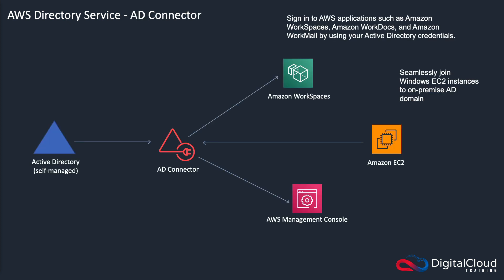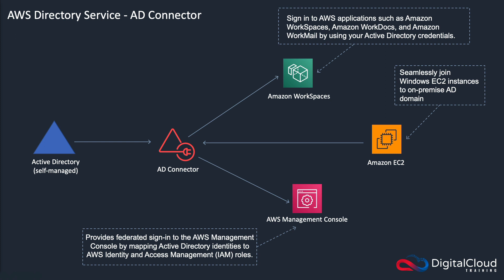The last service is called the Active Directory Connector. In this case, you've got an Active Directory on-premises and you have the AD Connector, which enables you to sign in to AWS applications. You're able to sign in to Workspaces, to the Management Console, and you're able to join EC2 instances to your on-premises domain. This is where you don't want to use the managed Microsoft Active Directory in AWS — this is actually your own directory, either in AWS or on-premises, and you're using that to authenticate the users, so you keep your users all in one place. It provides the ability to federate with the AWS Management Console and it can map your Active Directory identities to IAM roles.